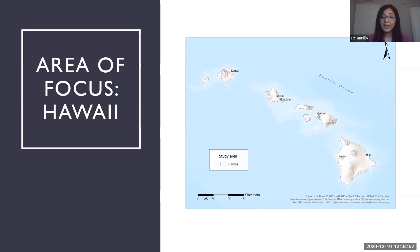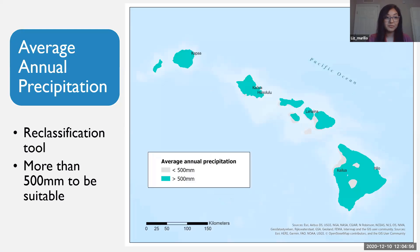This is my area of study, the Hawaiian Islands. So my first data set is the average annual precipitation. Here, all the areas in green meet that get a threshold of at least 500 millimeter precipitation a year. I use the reclassification tool in ArcGIS to differentiate between areas that were suitable for mosquito habitats and areas that don't meet the minimum of 500 millimeters precipitation throughout the year.